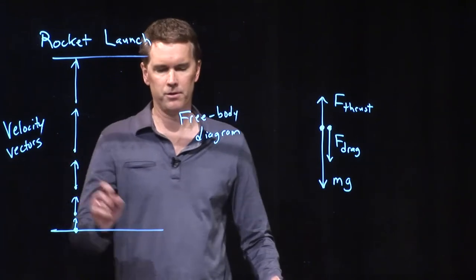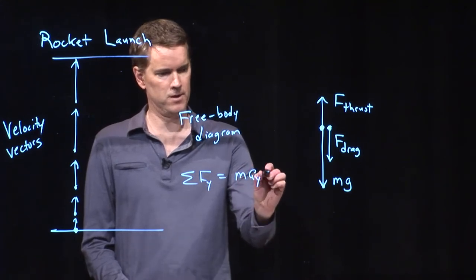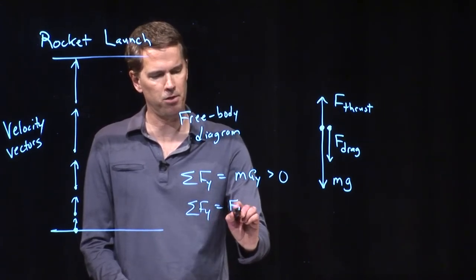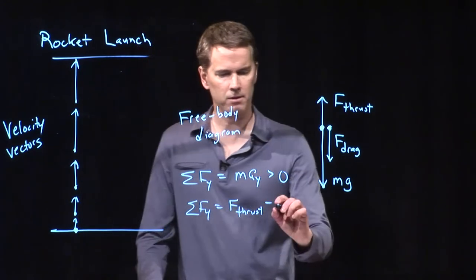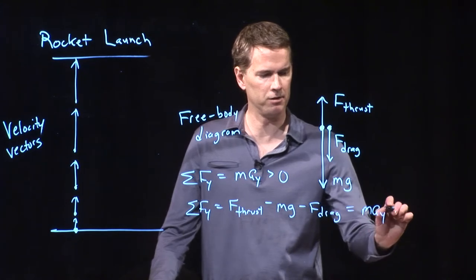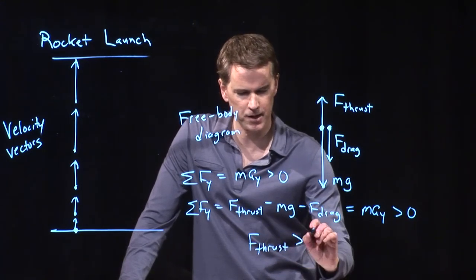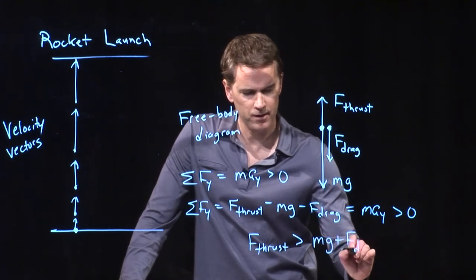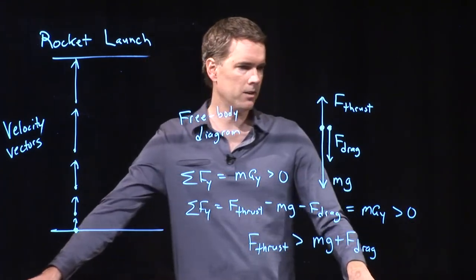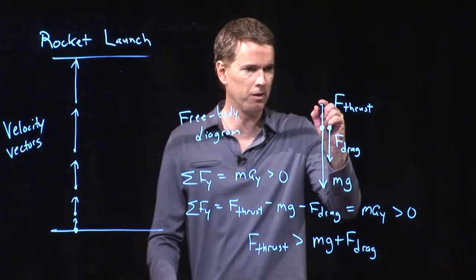If the rocket is accelerating upwards, then we have to have a positive number for this — bigger than zero. Which means that all my forces — F thrust going up, minus mg, minus F drag — has to be bigger than zero. And if that has to be bigger than zero, then F thrust has to be bigger than the combination of mg and F drag. So you're exactly right that if this thing is going to accelerate upwards, F thrust has to be bigger — in fact, bigger than the sum of both of those.